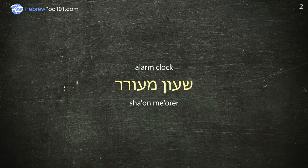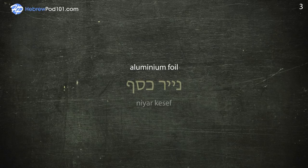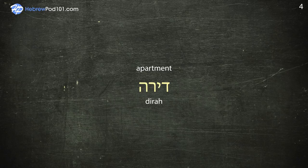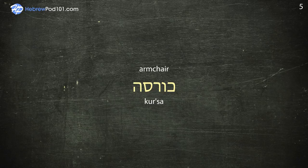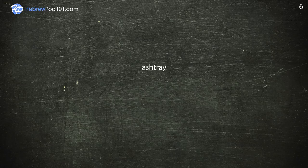Aluminum Foil — Niyar Kesef. Apartment — Dira. Armchair — Kosa. Ashtray — Maffera.